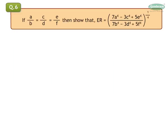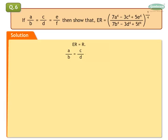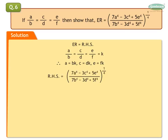If A upon B is equal to C upon D is equal to E upon F, then show that each ratio is equal to the bracket (7A raised to 4 minus 3C raised to 4 plus 5E raised to 4) upon (7B raised to 4 minus 3D raised to 4 plus 5F raised to 4) the whole raised to 1 upon 4. Solution: Let us assume each ratio be equal to K. So we get A is equal to BK, C is equal to DK, E is equal to FK. Let us express A, C and E in terms of BK, DK and FK on the right hand side.